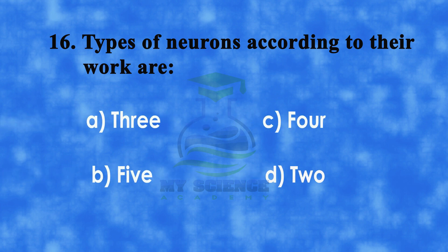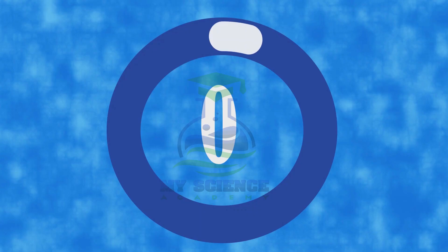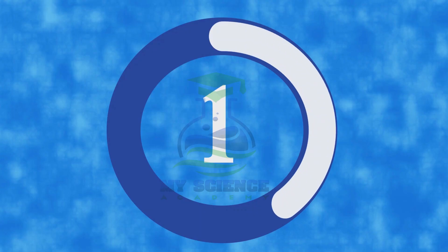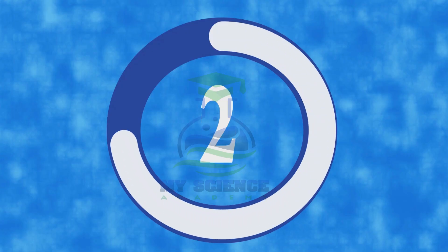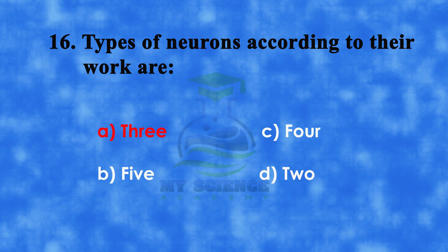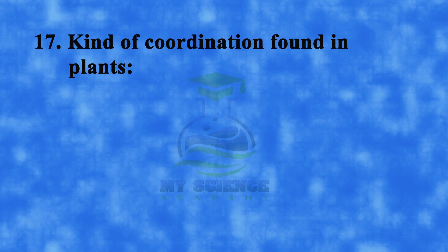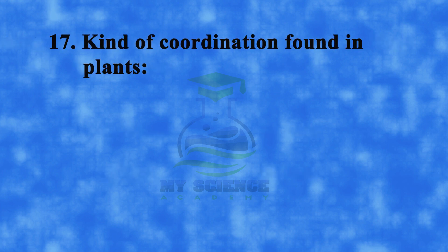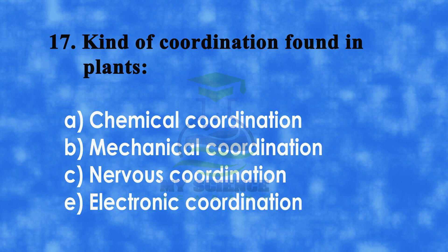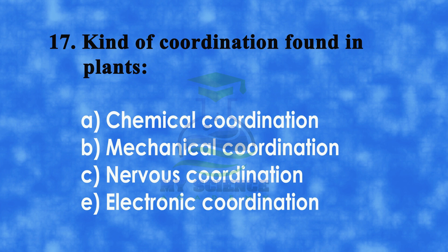Number 16: Types of neurons according to their work are. A: 3, B: 5, C: 4, D: 2. And correct answer is A: 3.